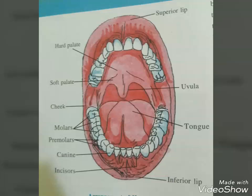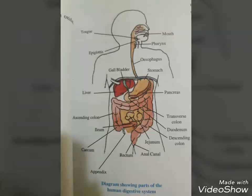Absorption of substances takes place in different parts of the alimentary canal — mouth, stomach, small intestine, and large intestine — however maximum absorption occurs in the small intestine. A summary of the absorption site and substances absorbed is given in table 16.1. Certain drugs coming in contact with the mucosa of the mouth and lower side of the tongue are absorbed into the blood capillaries. In the stomach, absorption of water, simple sugars, and alcohol takes place. The small intestine is the principal organ for absorption of nutrients; digestion is completed here and the final products — glucose, fatty acids, glycerol, and amino acids — are absorbed through the mucosa into the bloodstream and lymph. In the large intestine, absorption of water, some minerals, and drugs takes place.